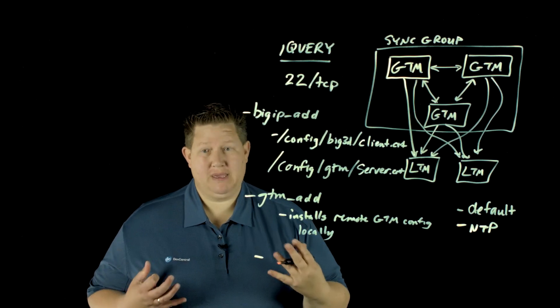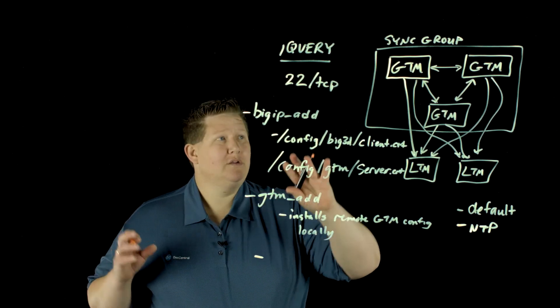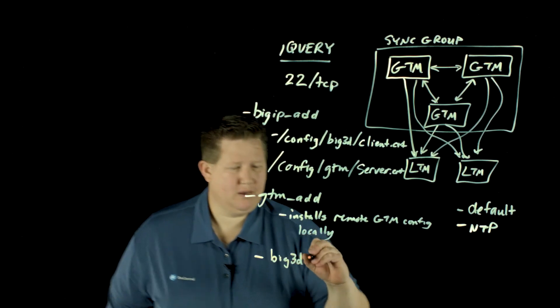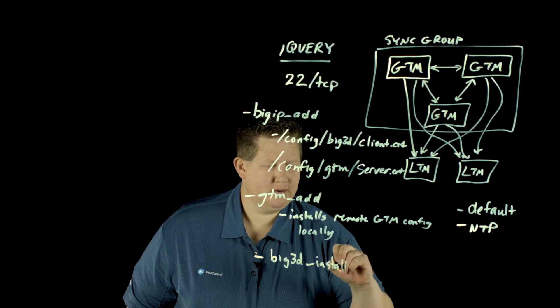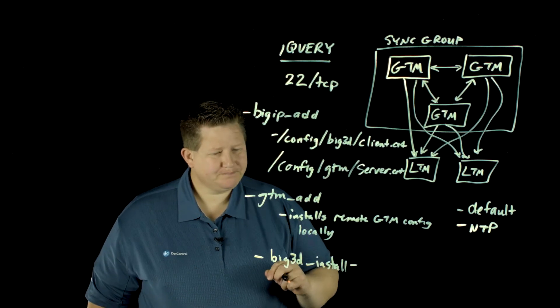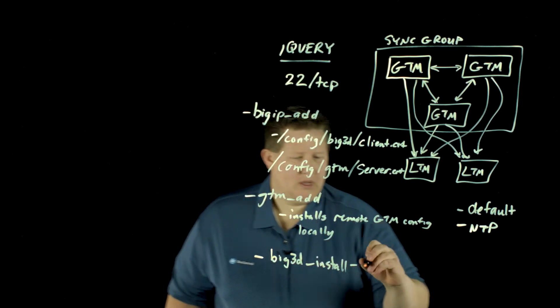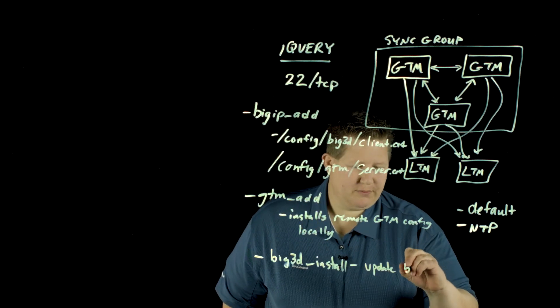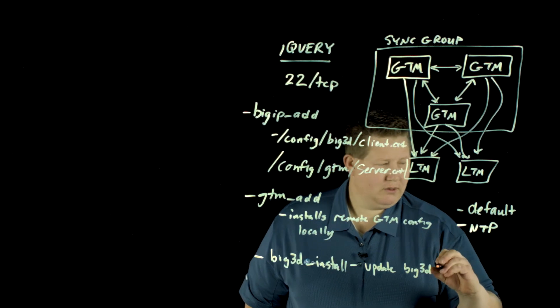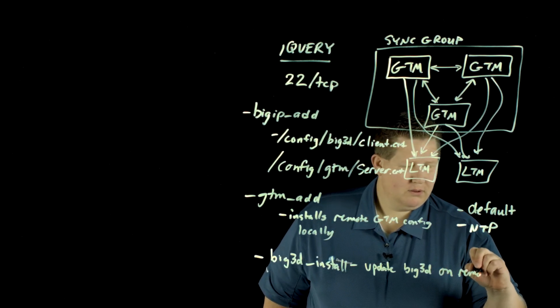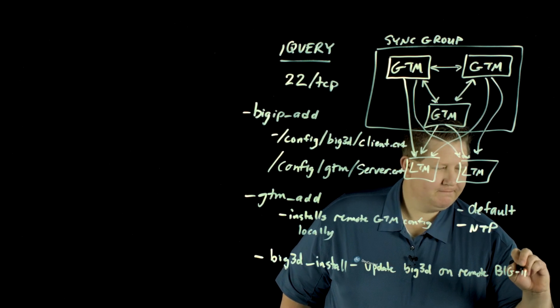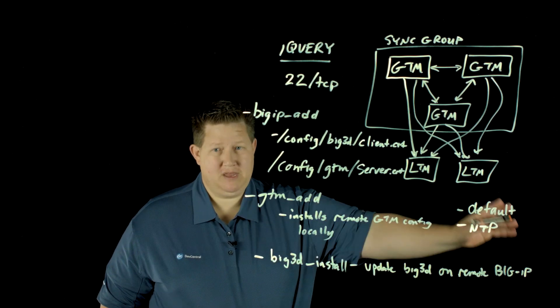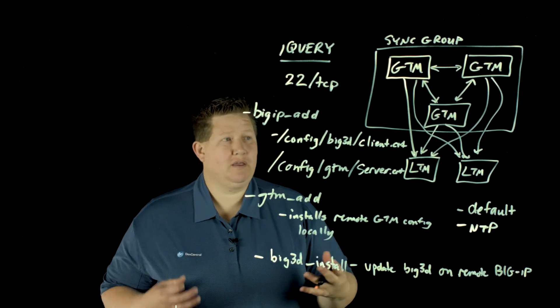And then the final big important command for getting to this mesh relationship is big3d_install. These are all command line commands that you run to establish the relationship here. And this will update or install or skip if it's already the most recent, the big3d daemon on remote BigIPs. So if you've upgraded your GTM and you have a new version of the big3d daemon, the big3d install will update that version on the remote BigIPs so that they can communicate appropriately.